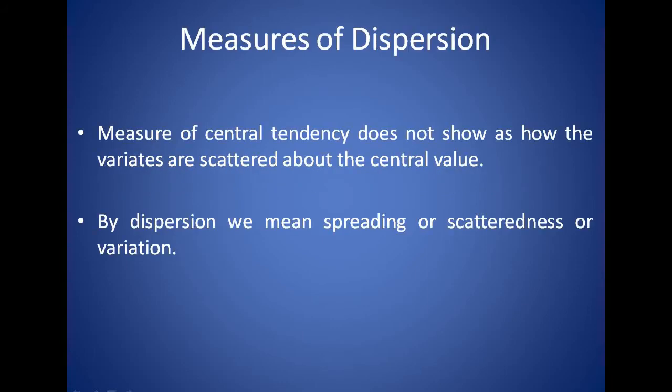Why measure of dispersion? It does not show us how the variables are scattered about the central value. Measure of central tendency is the average value — that is the central value of the other variables. Dispersion is spreading, scatteredness, or variation.